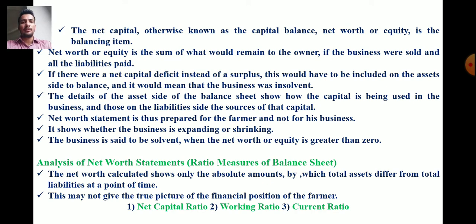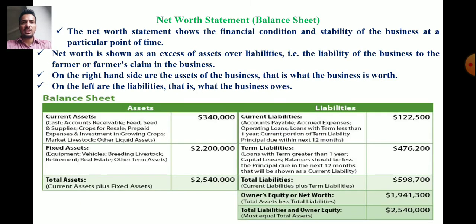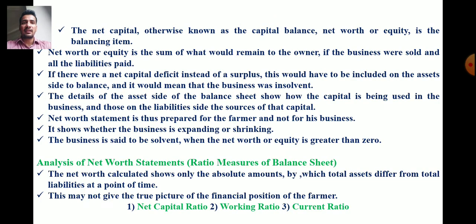For your semester exam, if asked to write a short note on balance sheet or net worth statement, cover: what the balance sheet shows, assets on the right hand side and liabilities on the left hand side, what is solvent and insolvent, whether the business is expanding or shrinking, and finally the three ratio measures — net capital ratio, working ratio, and current ratio.